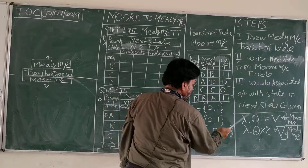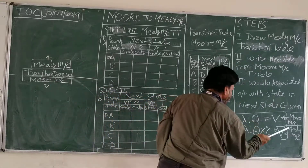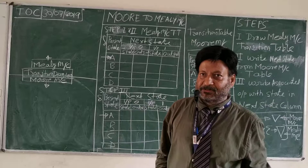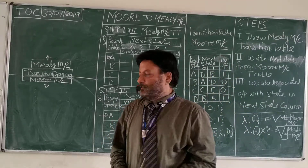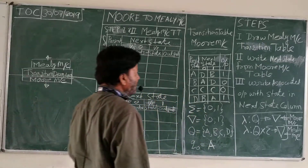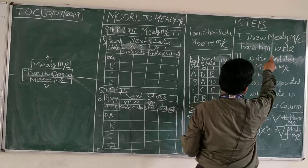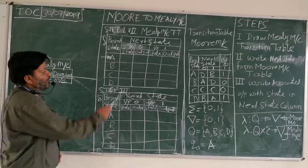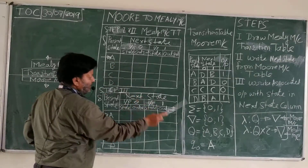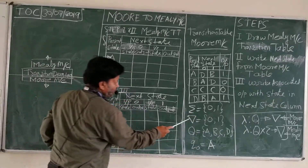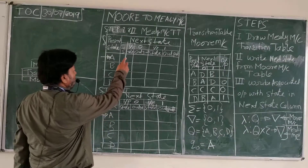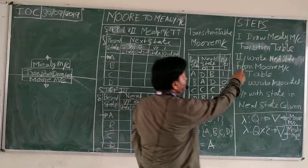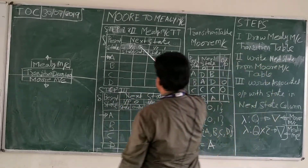So these are the output functions, and they are different in the case of Moore machine and in the case of Mealy machine. As I already have told you, Mealy and Moore machines are deterministic machines — they are deterministic finite automata with output. There are three steps to convert a Moore machine to a Mealy machine. The first step is to draw the Mealy machine transition table. We have drawn the Mealy machine transition table with present state, initial state A, and next state columns for input 0 and 1.